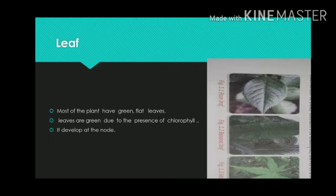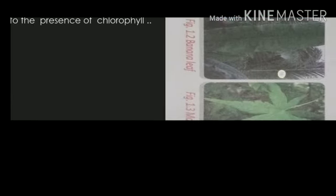Most of the plants have numerous green flat leaves. Leaves are green due to the presence of green colored substance called chlorophyll. It develops at the node, but some leaves do not appear green. This is because they contain a greater amount of substance of other colors. For example, leaves of a croton plant are red in color. Some examples of leaf are rose leaf, banana leaf.